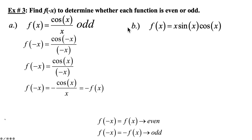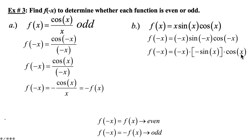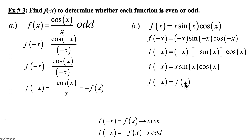For part B, put negative x in for x, negative x for the other factor, negative x in for sine, and negative x in for cosine, then simplify. Negative x stays negative x. Sine of negative x becomes negative sine of x. Cosine of negative x becomes cosine of x. These two negatives multiply to become a positive, and we're right back to where we started. Therefore, this is an even function.